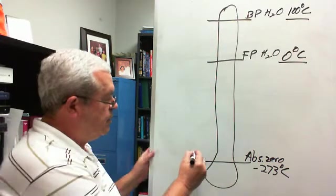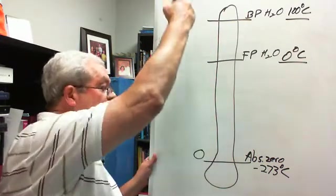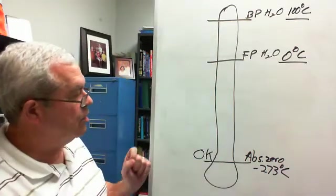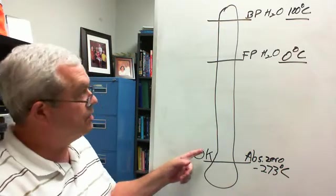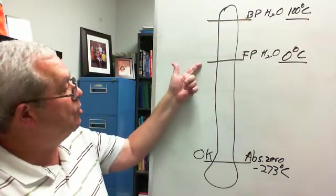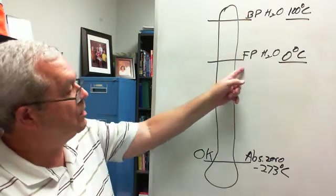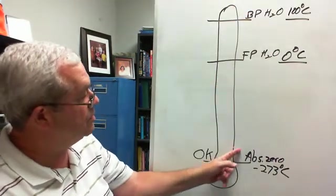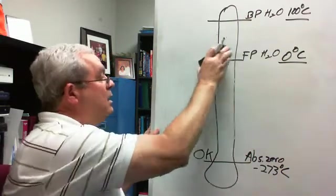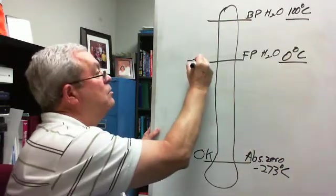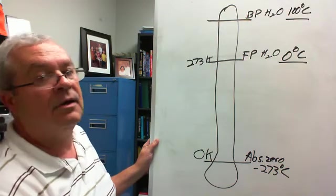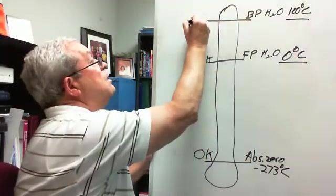Absolute zero happens to be zero on another scale — the Kelvin scale. Zero K. The Kelvin folks don't like the little degree sign, so we call it zero K. And Kelvin degrees are exactly the same size as Celsius degrees. So what's the freezing point of water in Kelvin? You have to go 273 degrees up from absolute zero — from minus 273 up to zero — so that's 273 K. That is the freezing point of water. And the boiling point of water would be another 100 degrees up: 373 K.